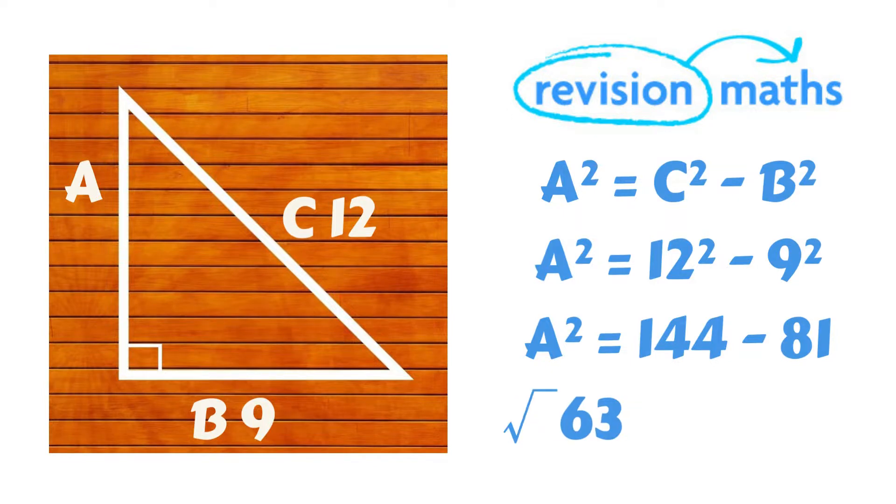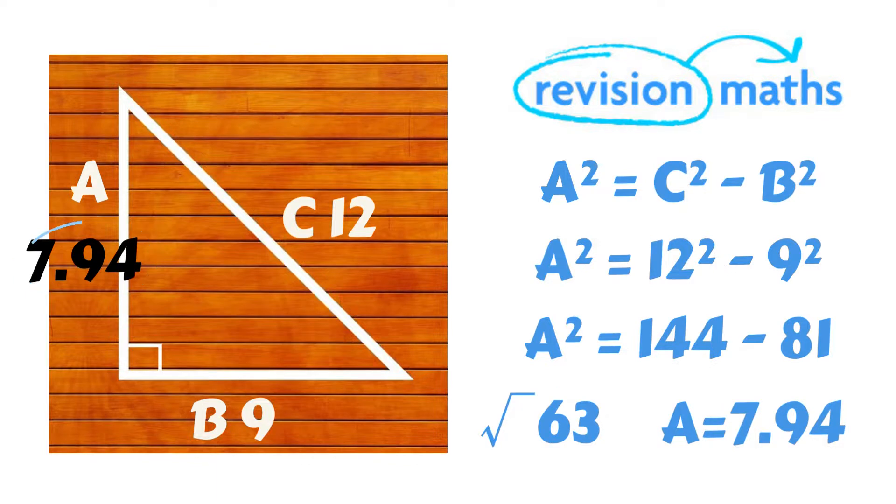So we square root the 63 to give us A = 7.94 to three significant figures.